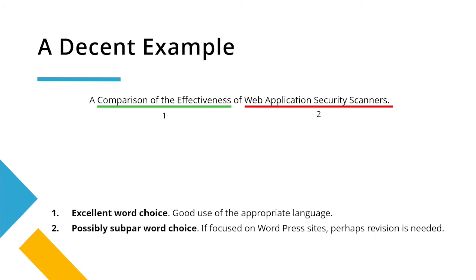Here's our decent example, using the exact same report — we've just done another draft. 'A comparison of the effectiveness of web application security scanners.' The phrase 'a comparison of the effectiveness' is superb, as it answers what was missing in the poor example — we now know what we're going to compare: the effectiveness of a scanner. But the second part of the title lets it down a little, with possibly subpar word choice, as we haven't given away what we're really going to focus on.